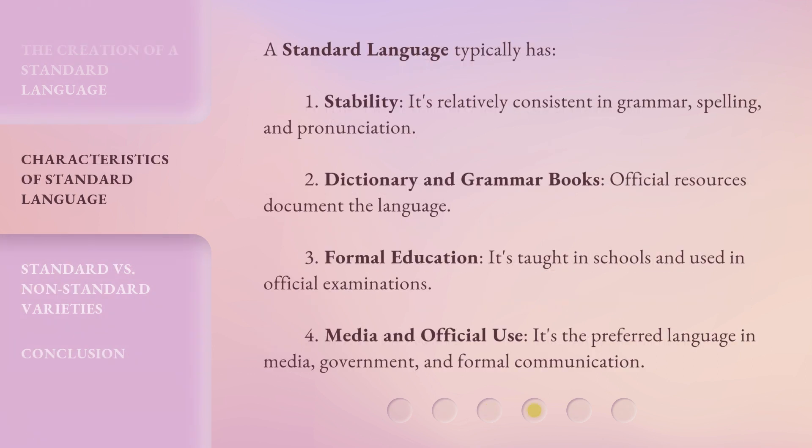A standard language typically has: 1. Stability — it's relatively consistent in grammar, spelling, and pronunciation. 2. Dictionary and grammar books — official resources document the language. 3. Formal education — it's taught in schools and used in official examinations. 4. Media and official use — it's the preferred language in media, government, and formal communication.